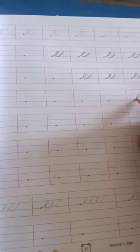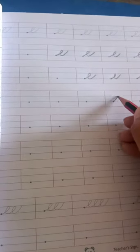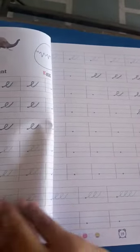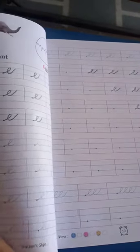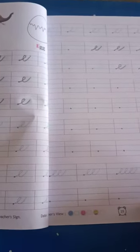Okay, like this. So do page number sixteen, seventeen, eighteen and nineteen in your cursive writing book. Four pages आपको करना है बेटा. आपकी book में ही करना है.